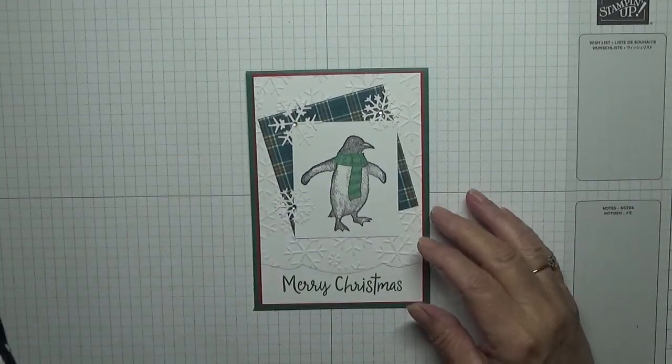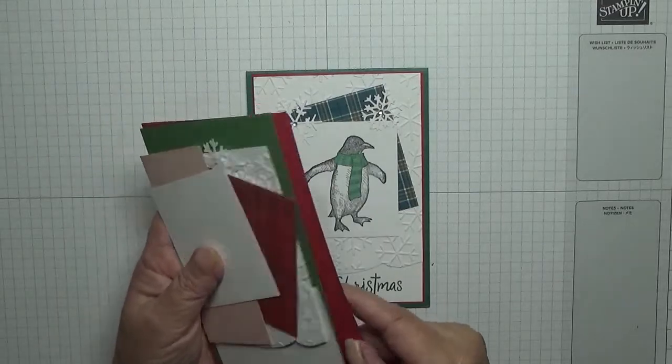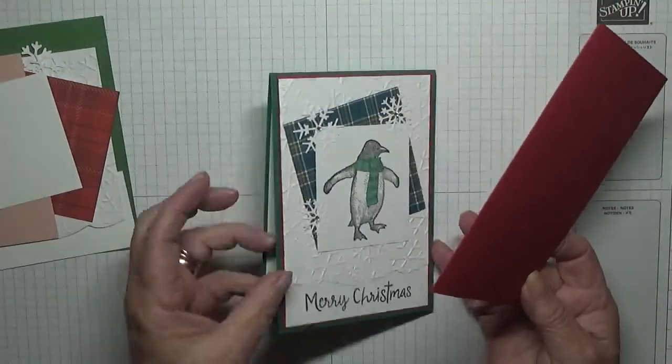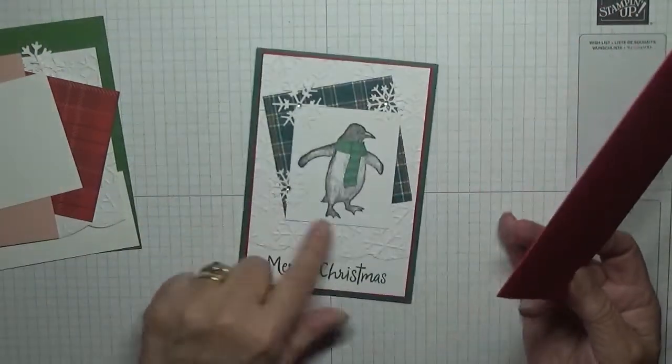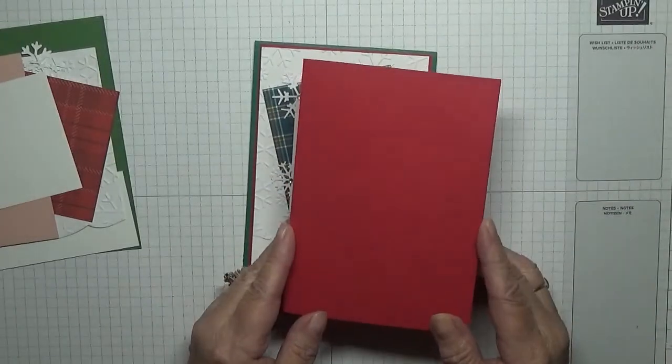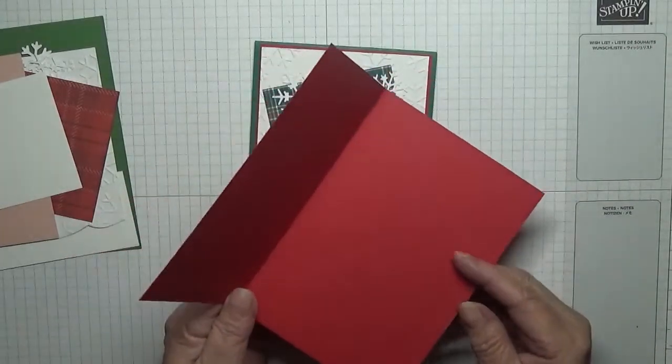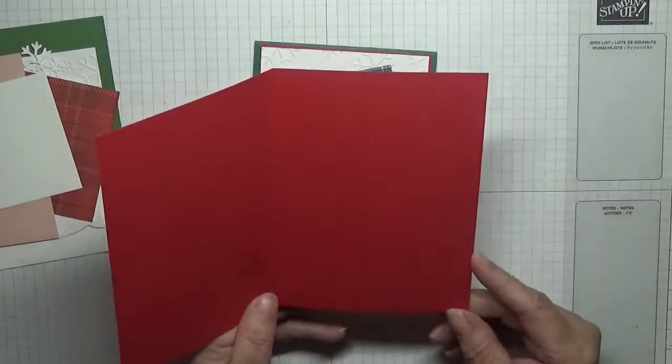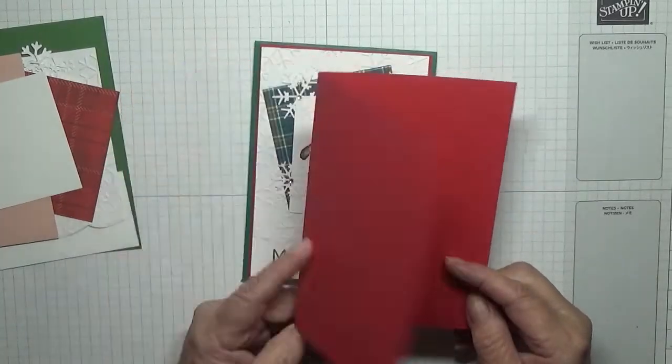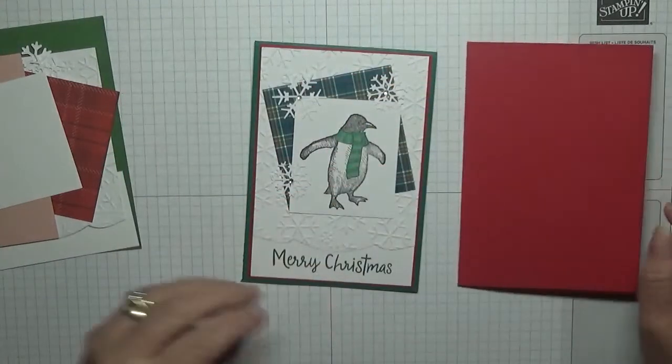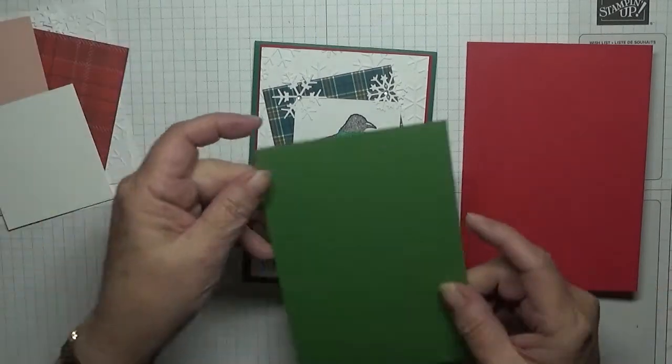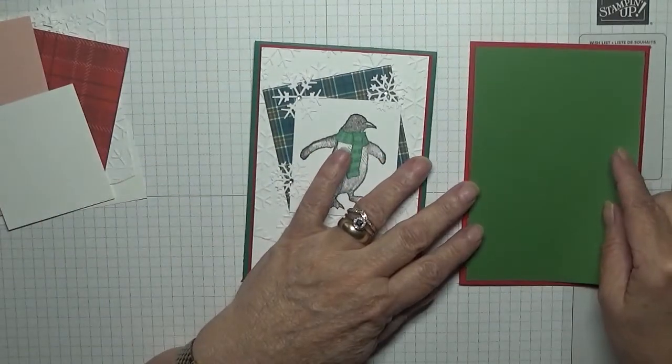For my cards I have this one in Garden Green with a border of red, and this one I'm going to do in Real Red, 8 and a quarter by 5 and 7/8 inches, scored at 4 and 1/8, folded in half and burnished. A piece of Garden Green at 5 and 5/8 by 3 and 7/8.